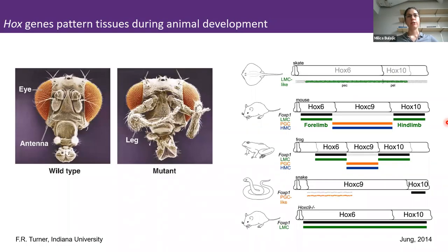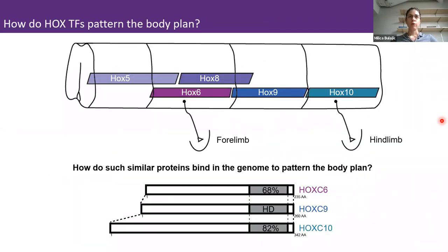Hox genes pattern tissues in all bilaterian animals along the main axis. In vertebrates, one of the tissues patterned by Hox genes is the spinal cord and the fates of motor neurons and interneurons along the rostral-caudal axis. For example, at forelimb and hindlimb levels, limb-innervating fate is controlled by Hox paralog six and ten. However, what we still don't fully understand is how these proteins, which are so similar, perform such vastly different functions during animal development.